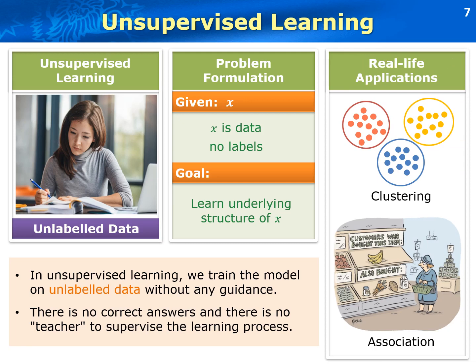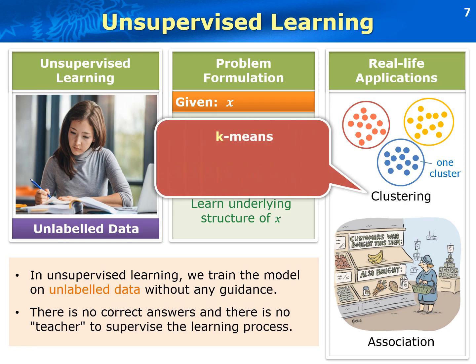Clustering is the task of dividing the data points into a number of groups, called clusters, such that data points in the same group are more similar to each other than to those in other groups. A well-known clustering algorithm is K-means, which is very popular in machine learning. The goal of K-means is to identify clusters in a given dataset and allocate each data point to the nearest cluster while keeping the centroids as small as possible. In the K-means algorithm, K refers to the number of centroids specified by the user, and means refers to averaging the data, that is, finding the center of each cluster.